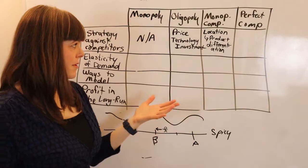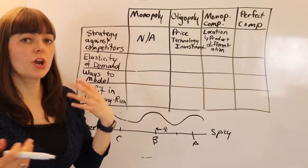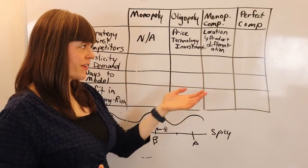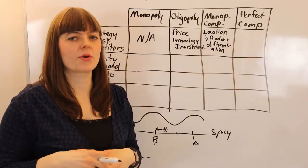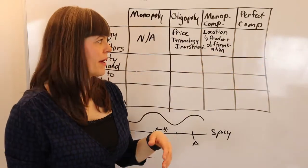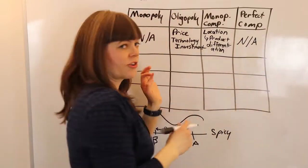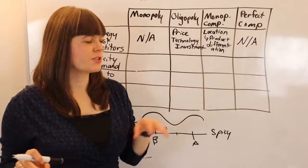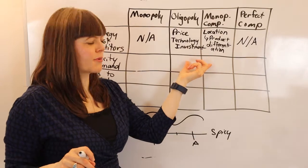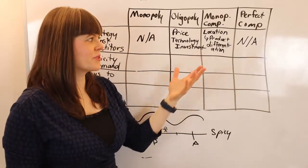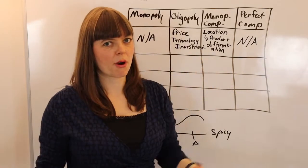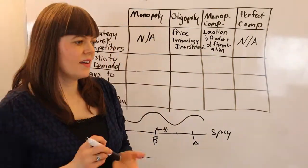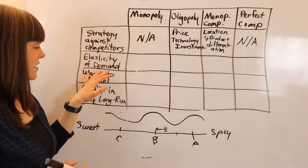Perfect competition also has no strategy against competitors, because the perfectly competitive firm is not really going to influence its competitors. So when you're talking about strategy between firms, you're most likely talking about oligopoly or monopolistic competition — the two most prominent market types we observe.